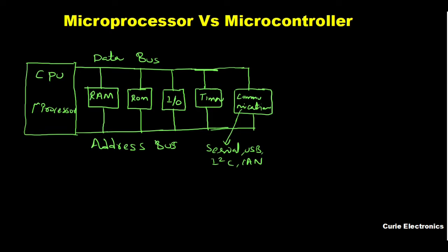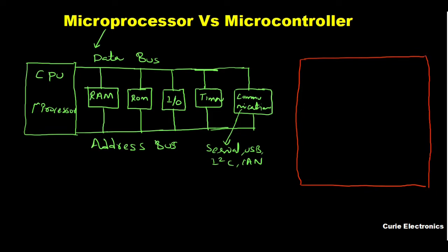Now let's see what a microcontroller is. A microcontroller will have everything built in — it is a single chip. Memory, I/O, timer — everything will be there, all built into one standalone chip.